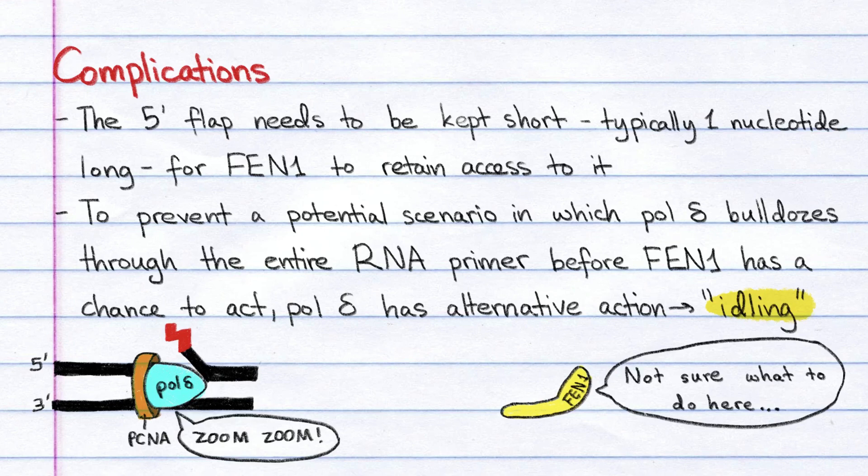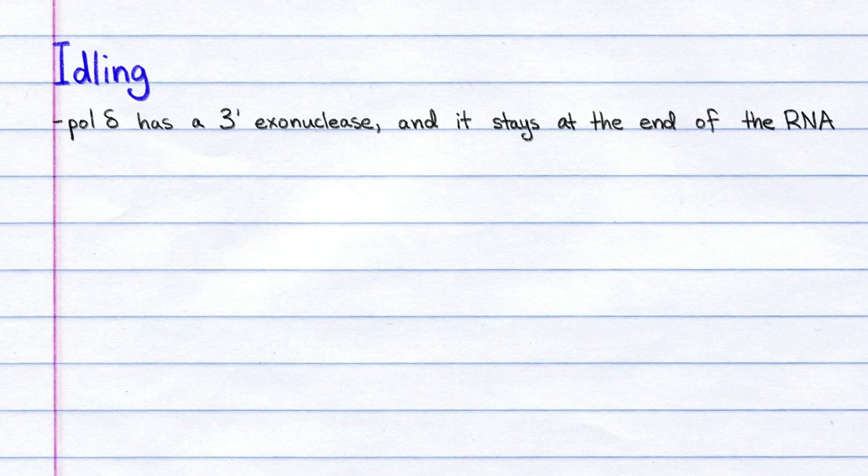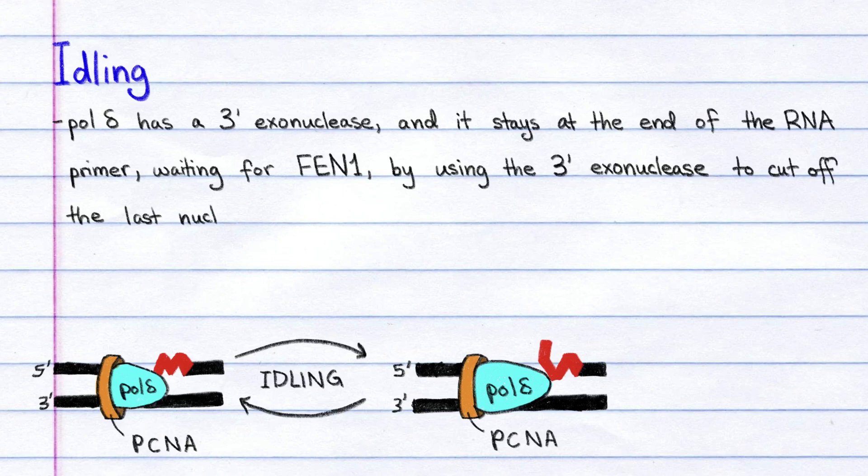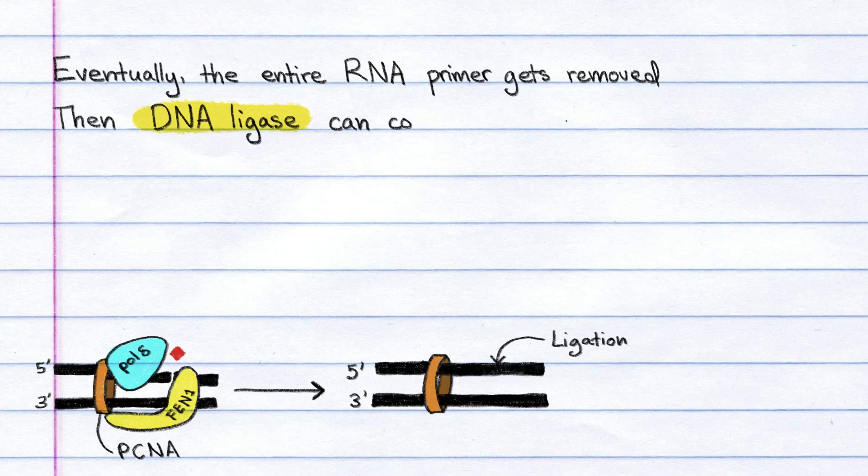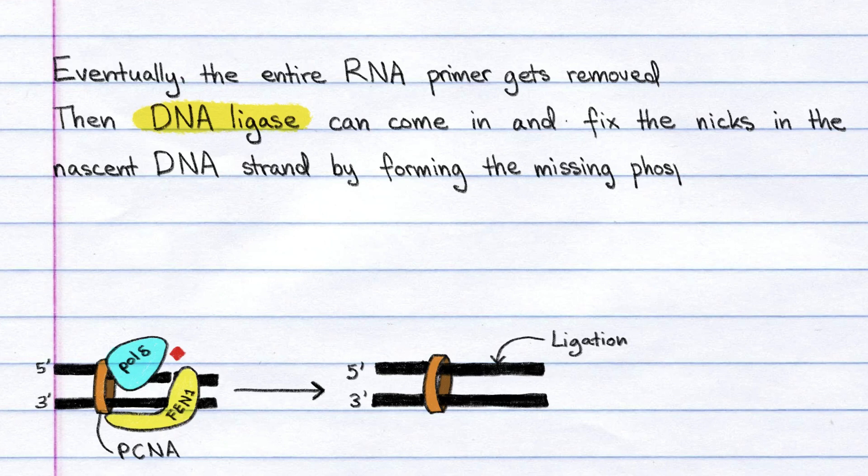Pol-delta has a 3' exonuclease, and it stays at the end of the RNA primer, waiting for FEN1, by using the 3' exonuclease to cut off the last nucleotide it inserted, then putting it back, then cutting it off, and so on. Eventually, the entire RNA primer gets removed this way, and then DNA ligase can come in and fix the nicks in the nascent DNA strand by forming the missing phosphodiester bonds.